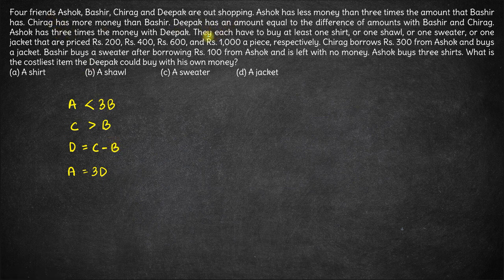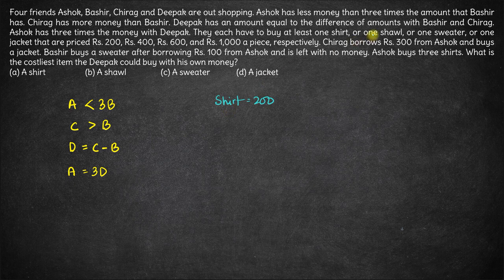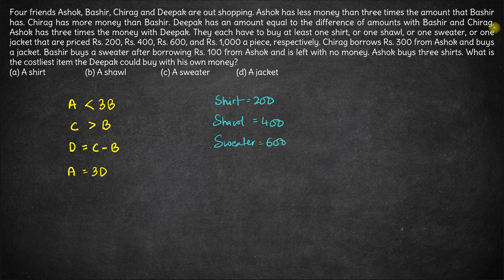It's given that there are certain articles that they buy. They have to buy at least one shirt, one shawl, one sweater, or one jacket. The cost of a shirt is 200 rupees, the cost of a shawl is 400 rupees, the cost of a sweater is 600 rupees, and the cost of a jacket is 1000 rupees.